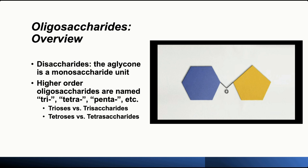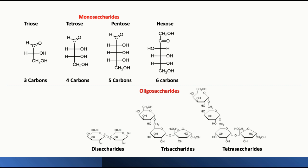There is a concept to clarify: triose versus trisaccharides, and tetrose versus tetrasaccharides. Triose and tetrose are all monosaccharides, the same as hexose or pentose. The difference between these monosaccharides is the number of carbons in each unit — for example, triose has three carbons and hexose has six carbons. For oligosaccharides, they are made of different numbers of monosaccharide units — for example, tetrasaccharides is made of four monosaccharide units.